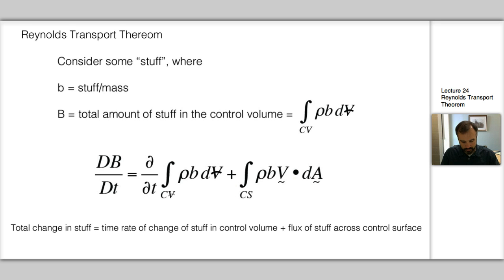This particular term here, the d over dt, this is inherently an unsteady term. So again, the total change of stuff is equal to the time rate of change of stuff in the control volume plus the flux across our control surface.